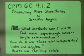Welcome to section 4.1.2. In this section we're going to connect more slope ratios to specific angles. Remember that in 4.1.1 we found out a few angles and that their slope ratios would always be the same for a particular angle. So we're going to try to find some more.